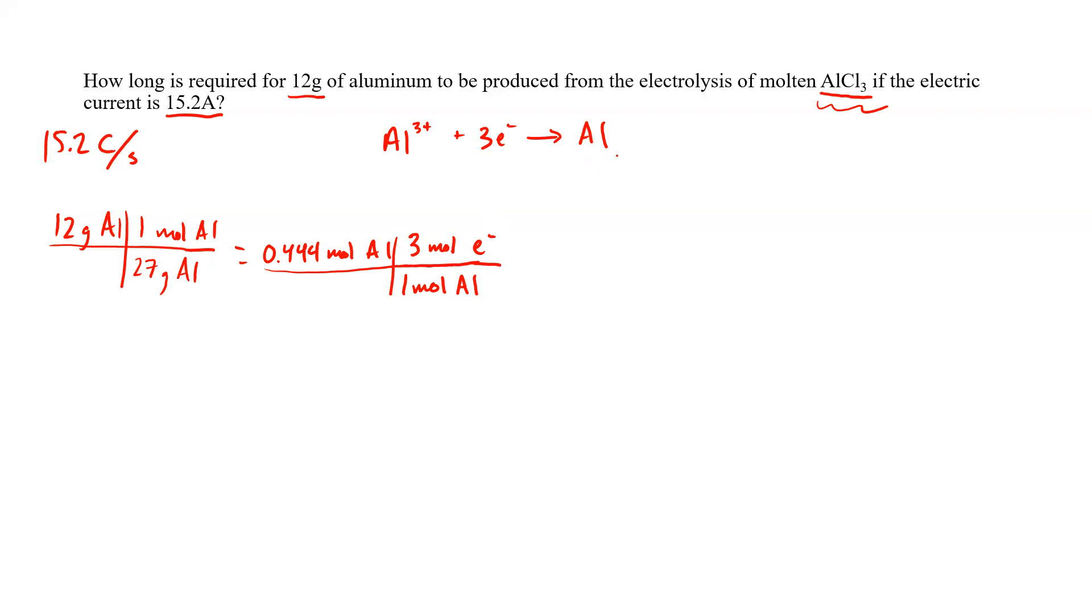So we're basically looking at a ratio of this to this, because when we can get it to electrons, then we can get it to coulombs per second, and then we can get it to a time by way of Faraday's constant. So this means we've got 0.444 times three, which gives us 1.332 moles of electrons.